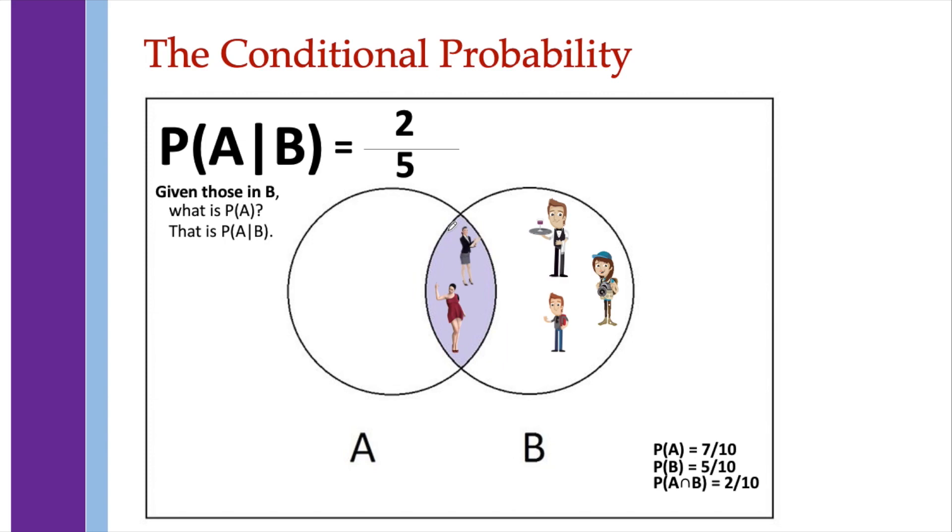Answer is 2 over 5. Since there are only 2 people here who are in A among these people who are in B.